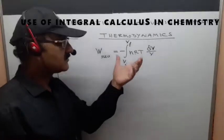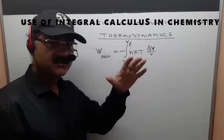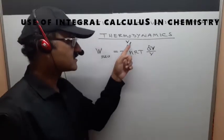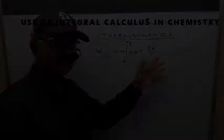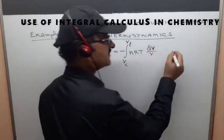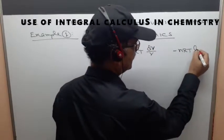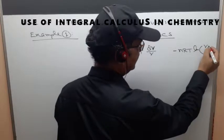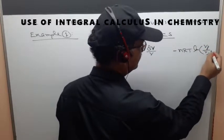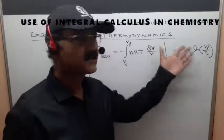So I think now looking at this you understand that this is a case of definite integration. In the book this result is given as nRT ln of Vf divided by Vi and they have not shown the calculations.